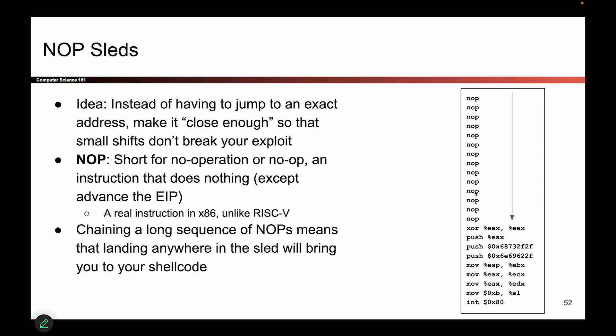Let's pretend we didn't have these no-ops and we wanted to execute just the shellcode — this xor instruction, then this push instruction, then another push instruction, and so forth. If we were running our classic buffer overflow exploit, the one where we overwrite the RIP to point at that shellcode, there would be one and only one success condition: take the RIP and overwrite it with the address of the xor instruction. If you get it right, you execute the xor, followed by the push, followed by the next push, and all these instructions execute one after the other.